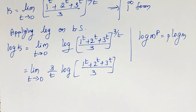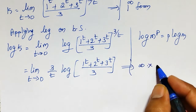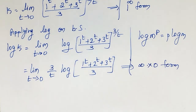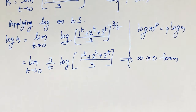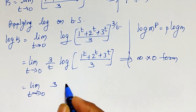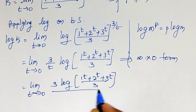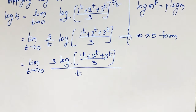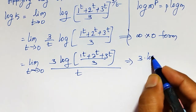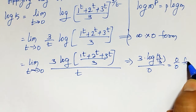As t tends to 0, this reduces to ∞ × log(1), which is the ∞ × 0 indeterminate form. I still cannot apply L'Hôpital's rule directly. By rearranging, I write it as 3 · log((1^t + 2^t + 3^t) / 3) divided by t, giving 0/0 form since log(1) = 0 in the numerator and t → 0 in the denominator. Now I can apply L'Hôpital's rule.